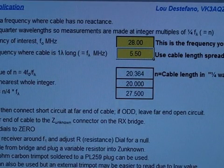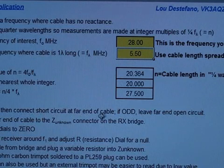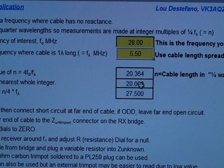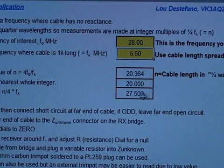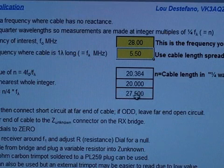Following the instructions under step 3, if N is even, then we connect a short circuit at the far end of the cable. If it's odd, we leave it open circuit. This is an even number. The second thing the calculation has given us is a frequency called F1. This is 27.500 megahertz.